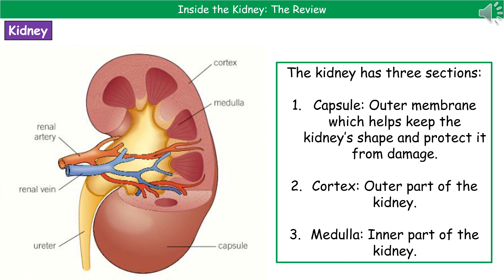First, we're going to look at the actual structure of the kidney itself. There's a diagram on the left-hand side with key features labeled that you need to know, in case you're asked to label that diagram in the exam. The tube that goes from the kidney down to the bladder is the ureter. Coming into the kidney and supplying it with blood is the renal artery, and leaving the kidney is the renal vein. When you see the word 'renal,' it just means to do with the kidney.